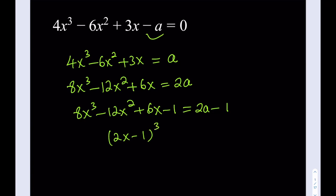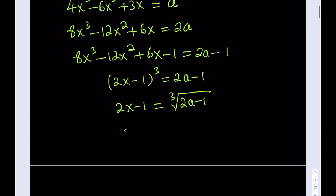And 2a minus 1 is considered a constant here. So we're solving for x, basically. How do you solve for x? You can cube root both sides. So if you do, you'll be getting 2x minus 1 is the cube root of 2a minus 1. Then I can add 1 to both sides. Then I'll be getting cube root of 2a minus 1 plus 1. And then you can divide both sides by 2. And that's going to be our x.